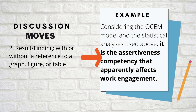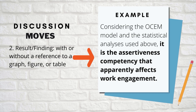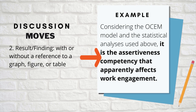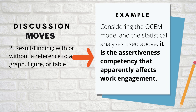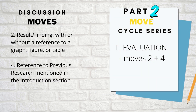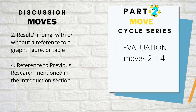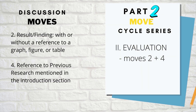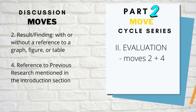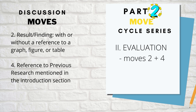For example: 'It is the assertiveness competency that apparently affects work engagement.' The second part of the discussion section — the evaluation — has several combinations of cycle series. The first combination is move two plus four: result and findings, with or without a reference to a graph, figure, or table, plus reference to previous research.